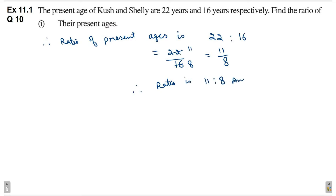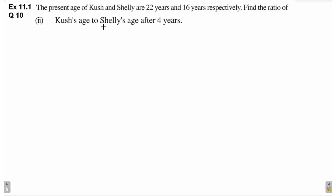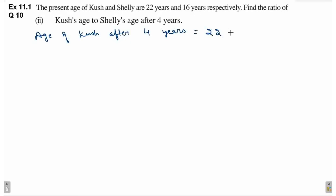This is the answer. Second part mein, find the ratio of Cush's age to Shelley's age after 4 years. So, age of Cush after 4 years will be — jitni Cush ki abhi age hai, 22 years — us mein 4 years add kar do. So, this is 26 years.